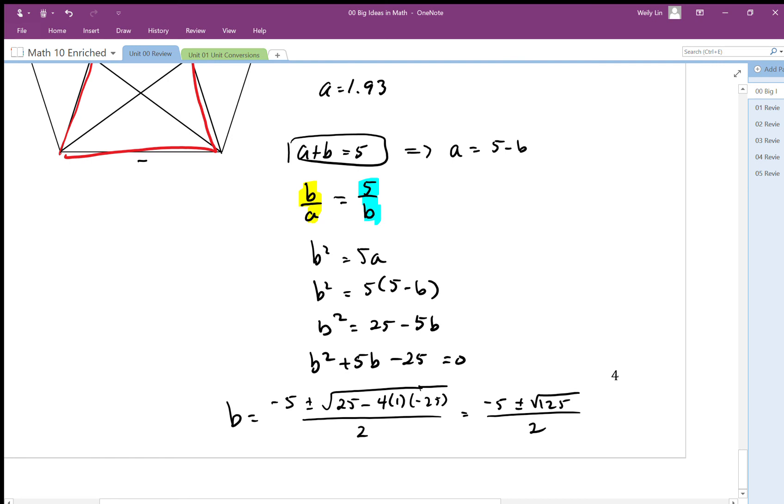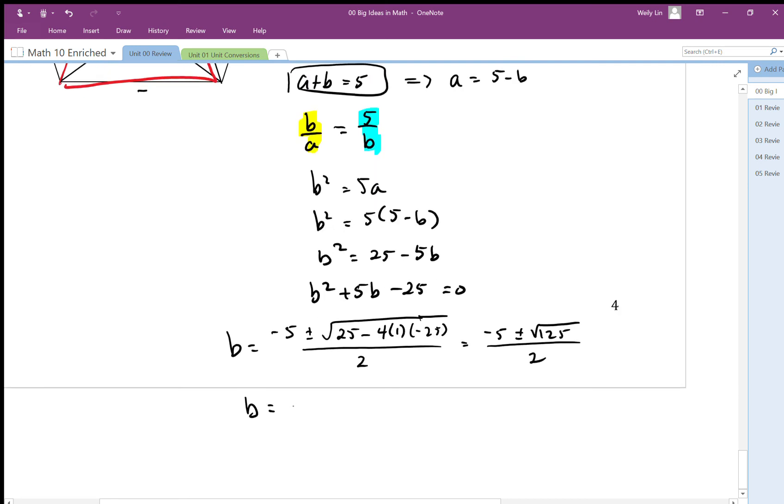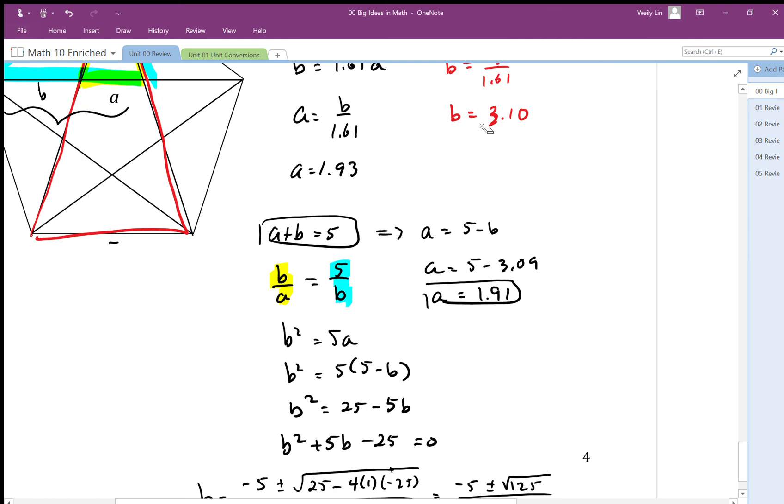Then we can solve for a by plugging it back into the original equation up here: a is equal to 5 minus b. So a is equal to 1.91 approximately. Our values here are a little bit off, but these values are actually a little bit more accurate.